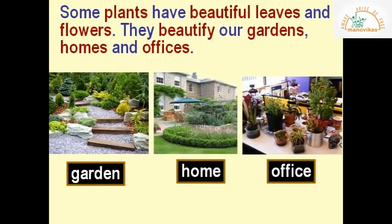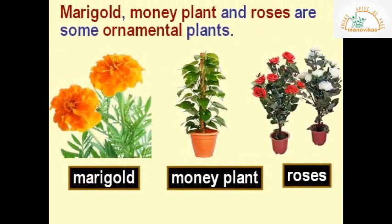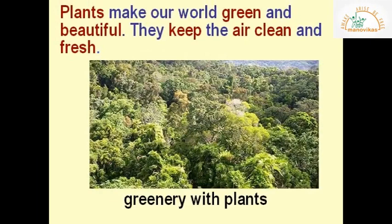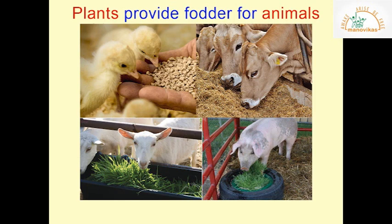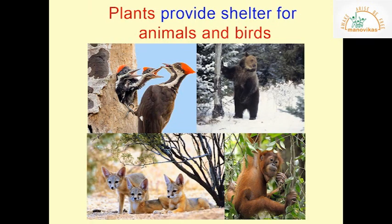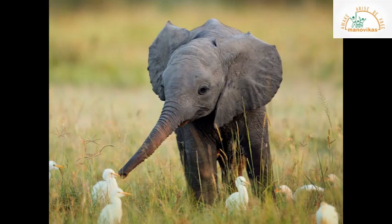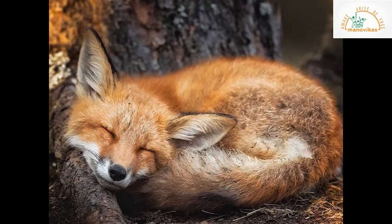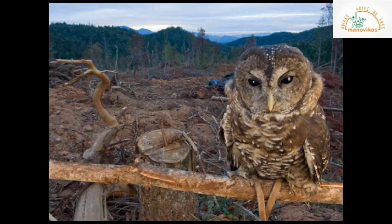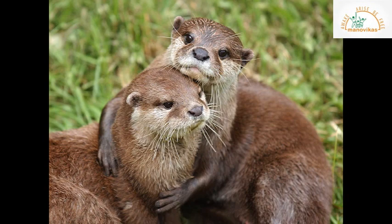Some plants have beautiful leaves and flowers that beautify our gardens, homes, and offices. Marigold, money plant, and roses are some ornamental plants. Plants make our world green and beautiful and keep our air clean and fresh. Plants provide fodder for animals and shelter to animals and birds. All living beings need plants, so we should take care of them by not cutting trees and growing more and more trees.